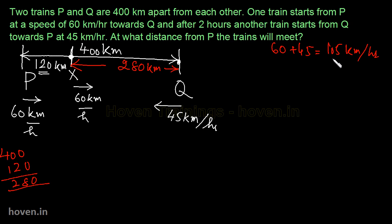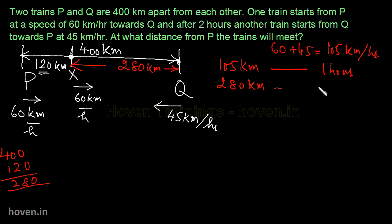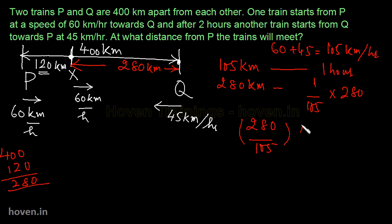तो 105 km are covered in one hour। यह 280 km कितने में cover होंगे? उसके लिए time लगेगा 280 by 105 hours। यानि कि 280/105 hours के बाद वो trains मिलेंगी।